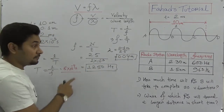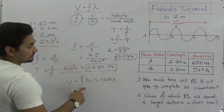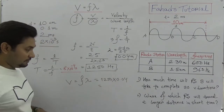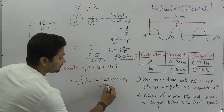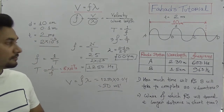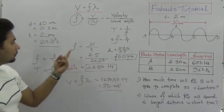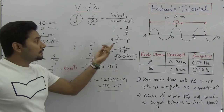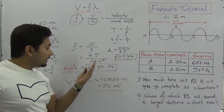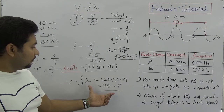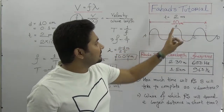Now to find the velocity of the wave, V = Fλ. We have F = 1250 hertz and lambda = 0.04 meters. Multiplying: 0.04 × 1250 = 50. So the wave velocity is 50 meters per second. So from the figure we obtained frequency, then time period, then wavelength, and finally the wave velocity — all from the data given in the diagram.